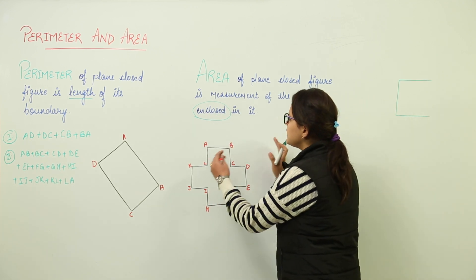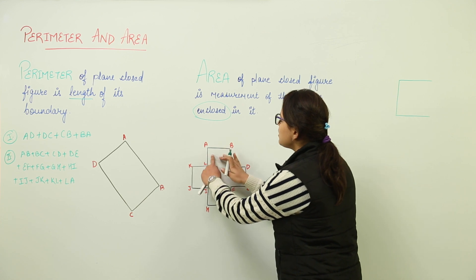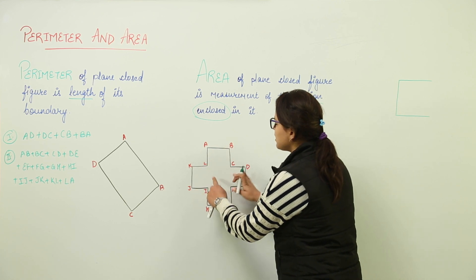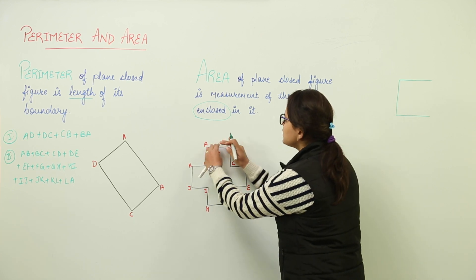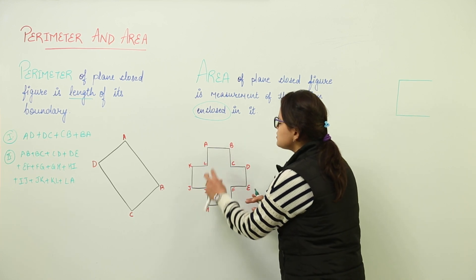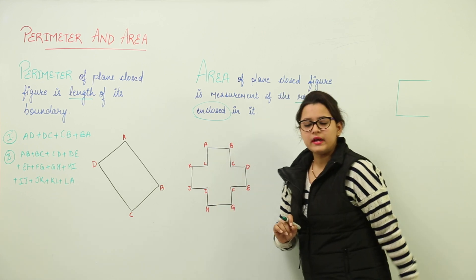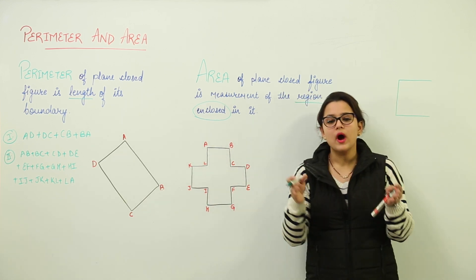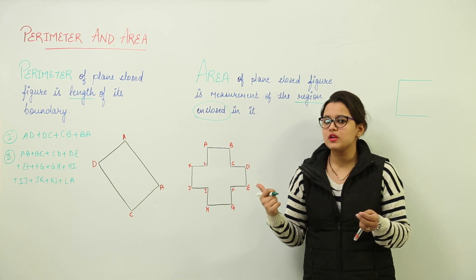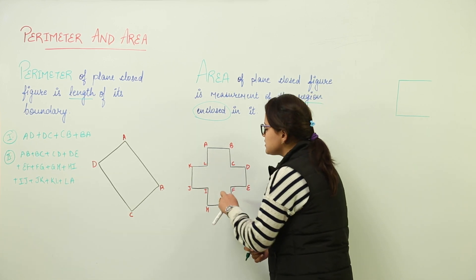Enclosed means the area or you can say the region between what the shape, the boundary of the shape is having. The region between the boundary is known as your area, right? Or you can say the region which is enclosed. Why enclosed? Because it is a closed figure. So, the region will be enclosed in this.